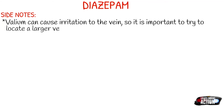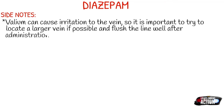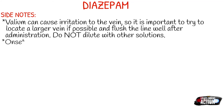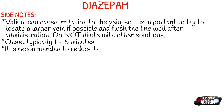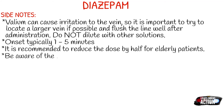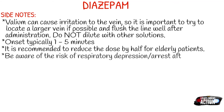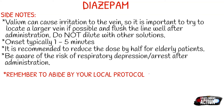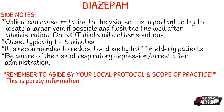Your onset of the medication is typically between one to five minutes, so it's pretty fast acting. It is recommended to reduce the dose by half for elderly patients. Be aware of the risk of respiratory depression or respiratory arrest after administration. Apnea in children after administration may also occur. Really be aware that if they already have a central nervous system depressant on board, what you're giving is going to potentiate that. And even if they don't, some people are very sensitive to CNS depressants, benzos, narcotics, et cetera.